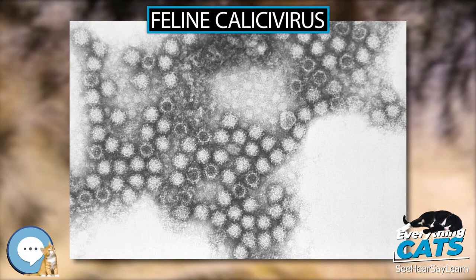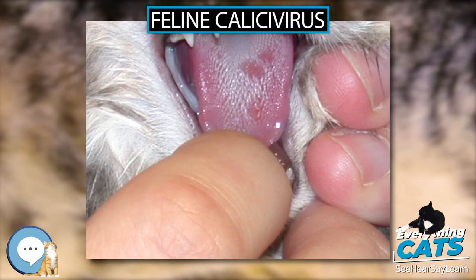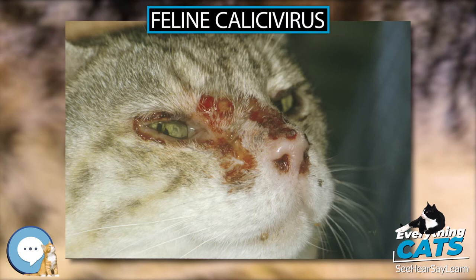Feline Calicivirus, FCV, is a virus of the family Caliciviridae that causes disease in cats. It is one of the two important viral causes of respiratory infection in cats, the other being Feline alphaherpesvirus 1. FCV can be isolated from about 50% of cats with upper respiratory infections. Cheetahs are the other species of the family Felidae known to become infected naturally.